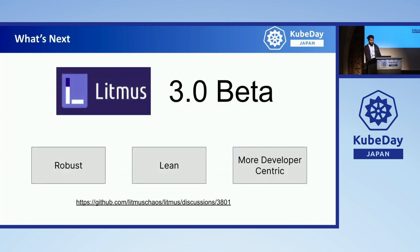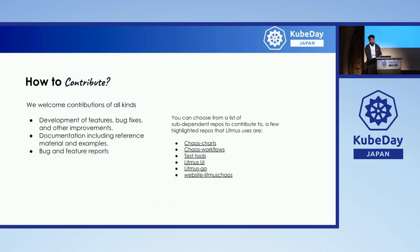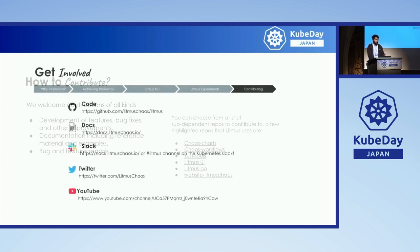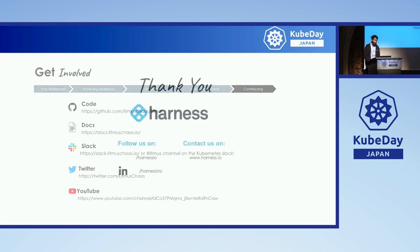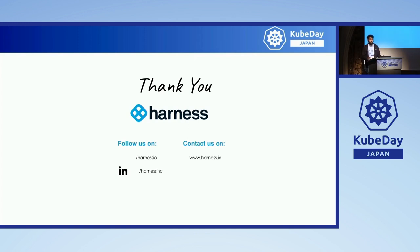What's next for Litmus? It's 3.0. We are developing a new UI — more robust, lean, and developer-centric. We're working on creating something special for the community. You can wait for the next KubeCon to see what's coming. You can contribute as well — new features, bug fixes, charts, and workflows that you can contribute to. To get involved in the community, there's code, docs, Slack, and Twitter. Feel free to reach out to me. I'm part of Harness, and we are building Harness Chaos Engineering over Litmus Chaos itself. Thank you so much, everyone.